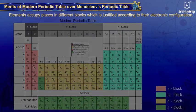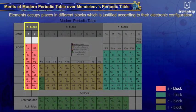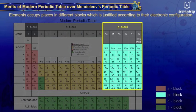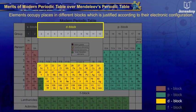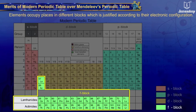Elements occupy places in different blocks, which is justified according to their electronic configuration.